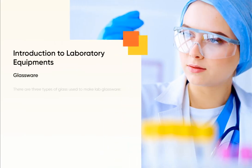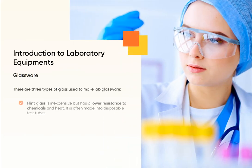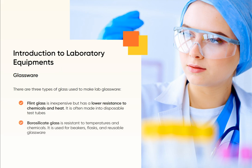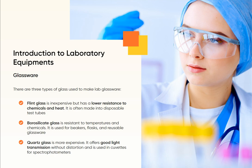There are three types of glass used to make lab glassware. Flint glass is inexpensive but has a lower resistance to chemicals and heat; it is often made into disposable test tubes. Borosilicate glass is resistant to temperatures and chemicals and is used for beakers, flasks, and reusable glassware.